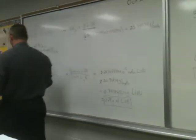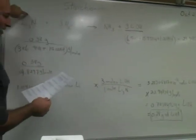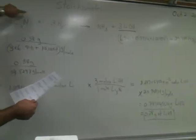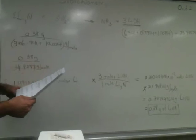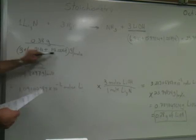So here, they're asking us, determine the mass of lithium hydroxide produced when 0.38 grams of lithium nitrite reacts with water. So here's the balanced equation. 0.38 grams of lithium nitrite. What's this?